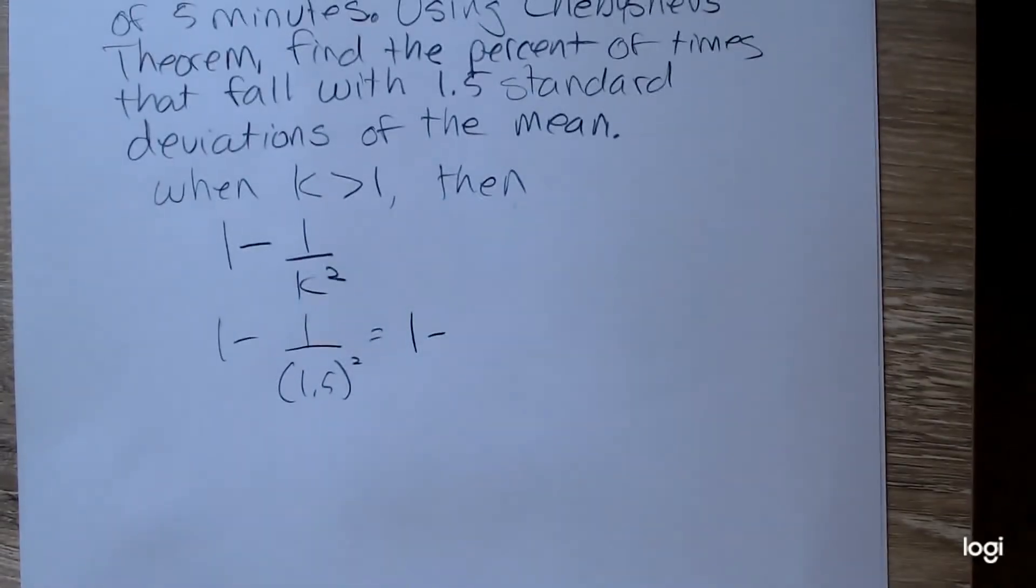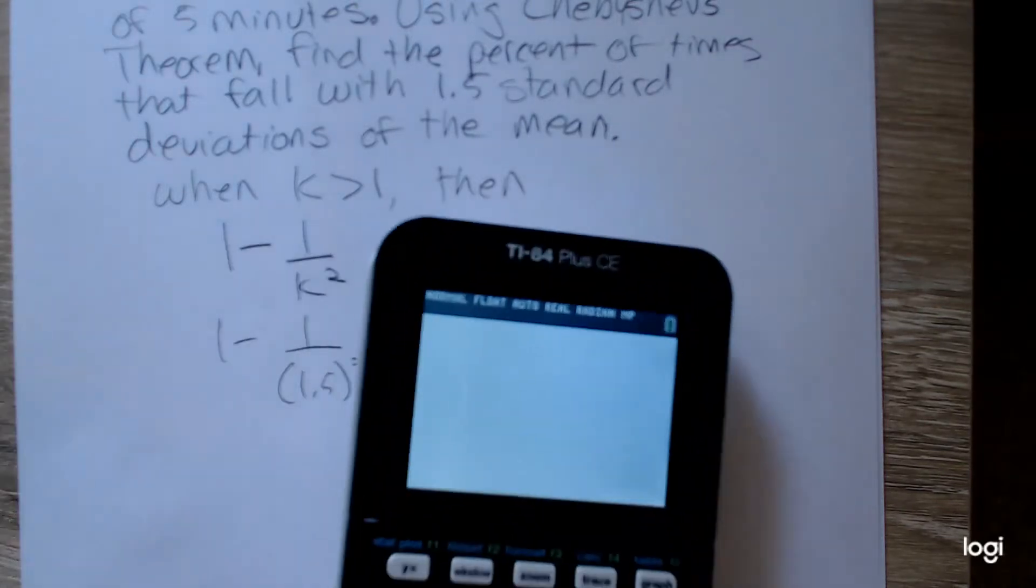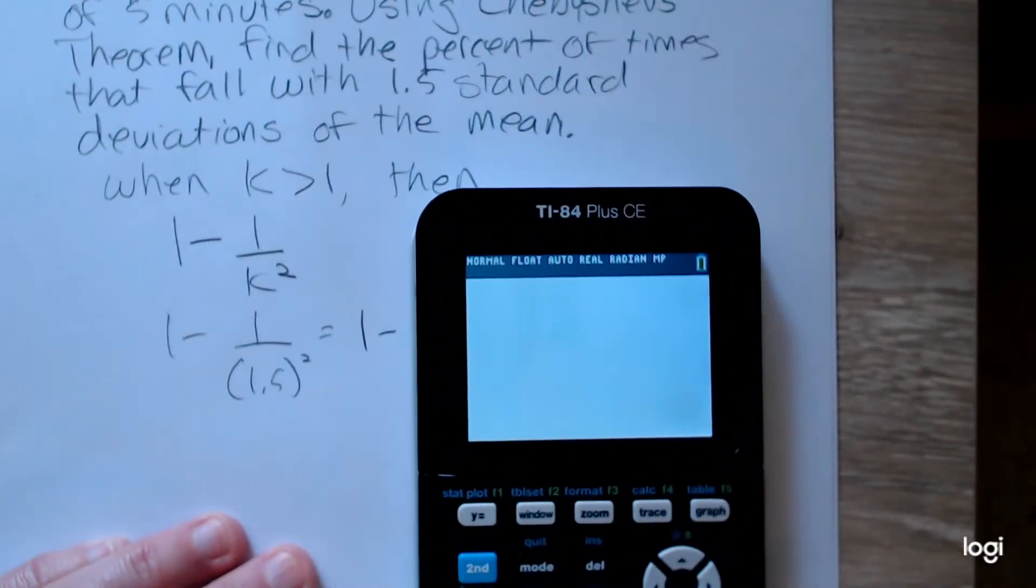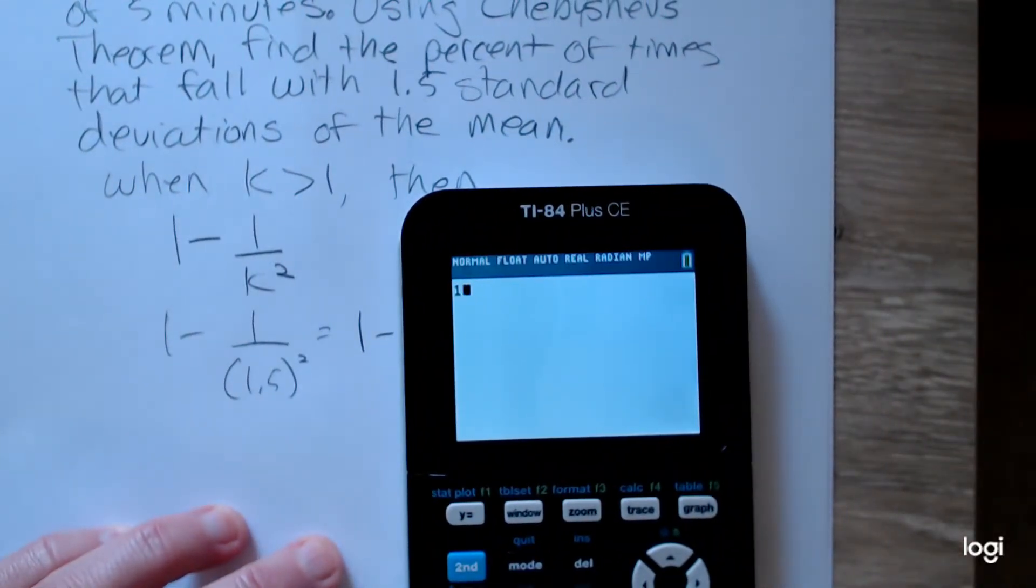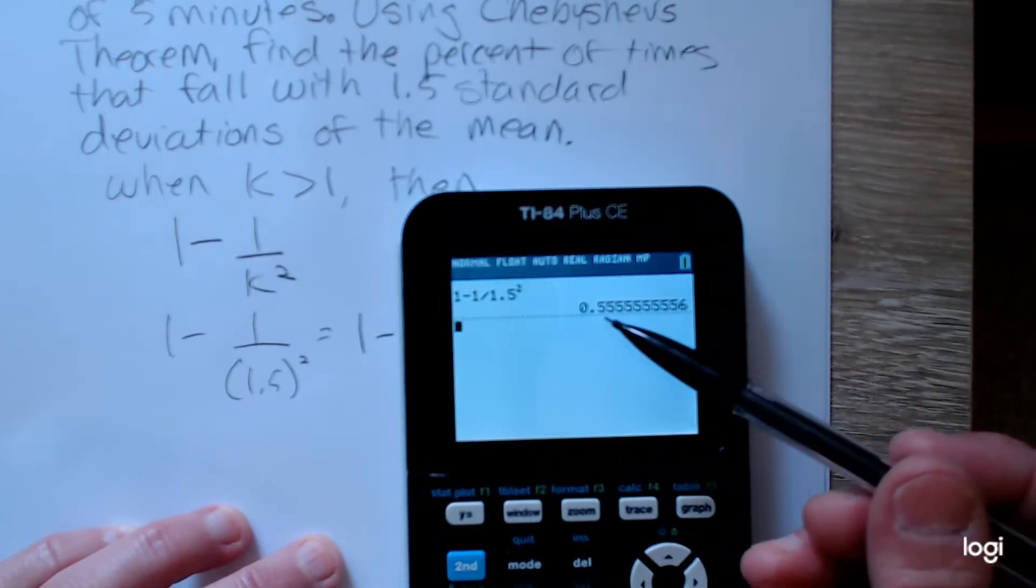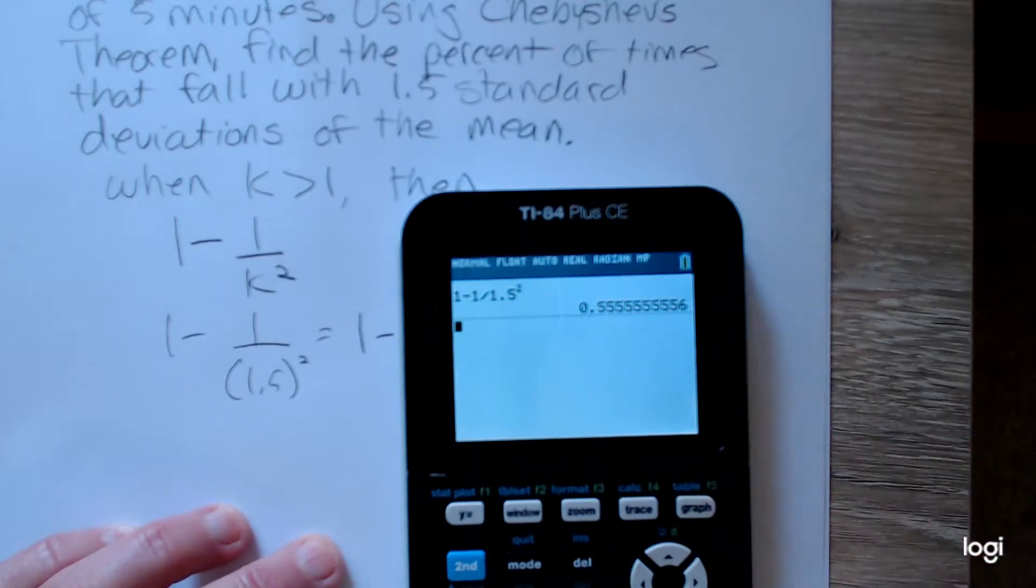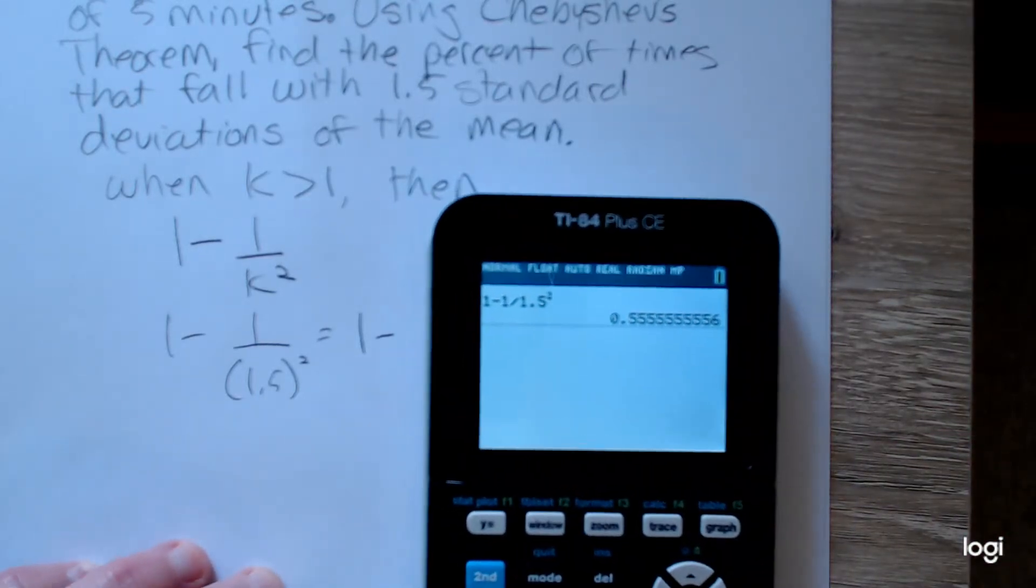Getting my calculator out and plugging this in, in as few steps as possible, I have 1 minus 1 divided by 1.5 and then x squared. I think that looks right. So I have about 0.56, rounded to two decimal places, that appears to be a repeating decimal.